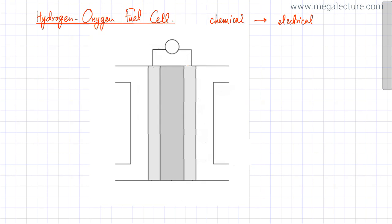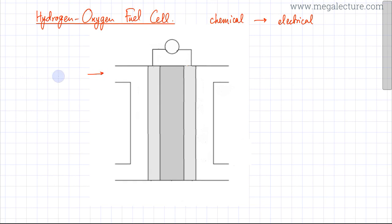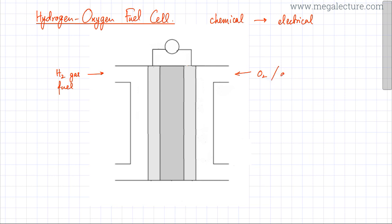This is a basic diagram of a hydrogen-oxygen fuel cell. The two inputs to this fuel cell are: hydrogen gas coming in on one side, which is going to act as your fuel, and from the other side oxygen gas — generally air that is pumped through — because air contains oxygen.